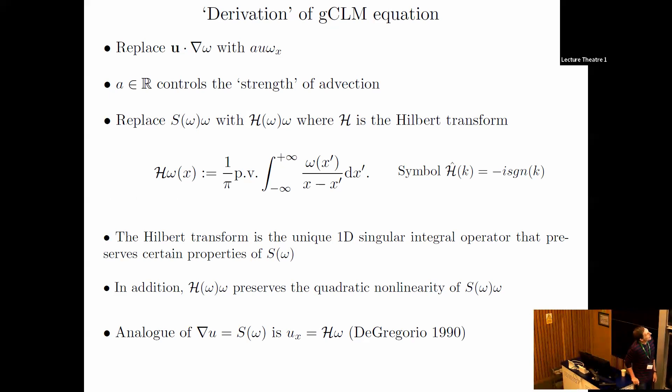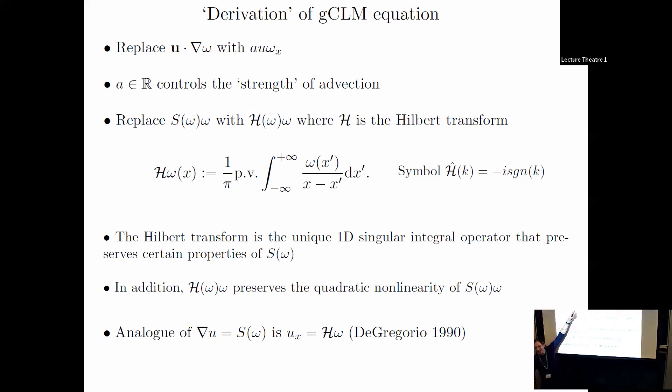Here's how you get to the GCLM equation. Replace u·∇u with the 1D version. I've added a parameter A, which controls the relative strength of advection compared to vortex stretching. I'll motivate that in a second. Then I replace the vortex stretching term with H omega, where H is the Hilbert transform, exactly what you saw in John Hunter's slide.